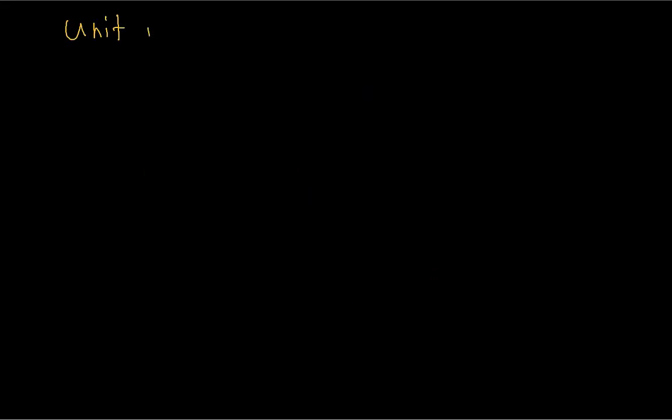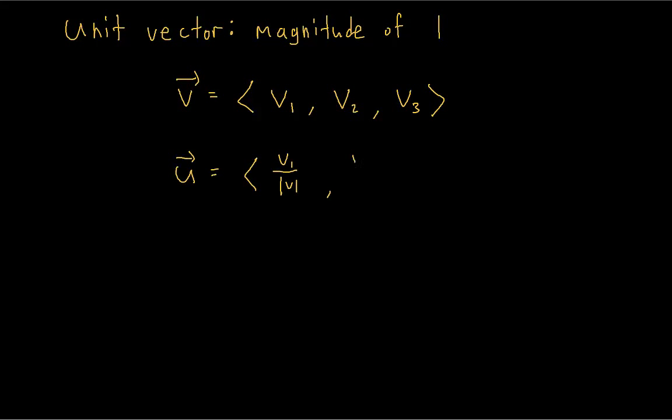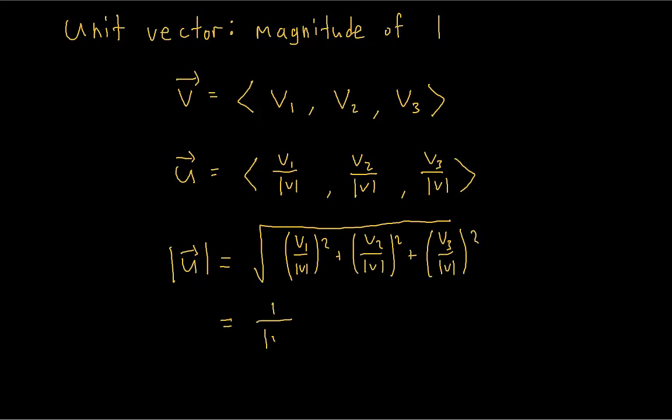Lastly, we have these things called unit vectors, which are just a vector with a magnitude of 1. If we have some random vector V, and we want to make V into a unit vector in the same direction, then all we do is divide each component of V by its magnitude. You can easily check that the magnitude of this new vector is going to be 1, and it still points in the same direction.